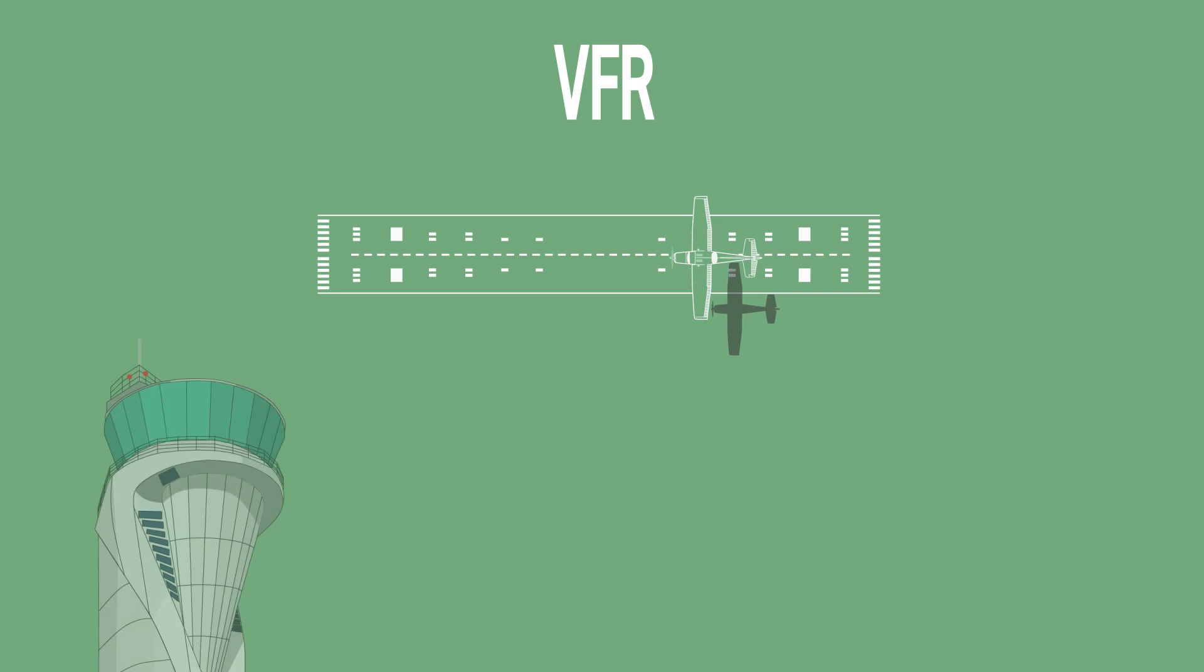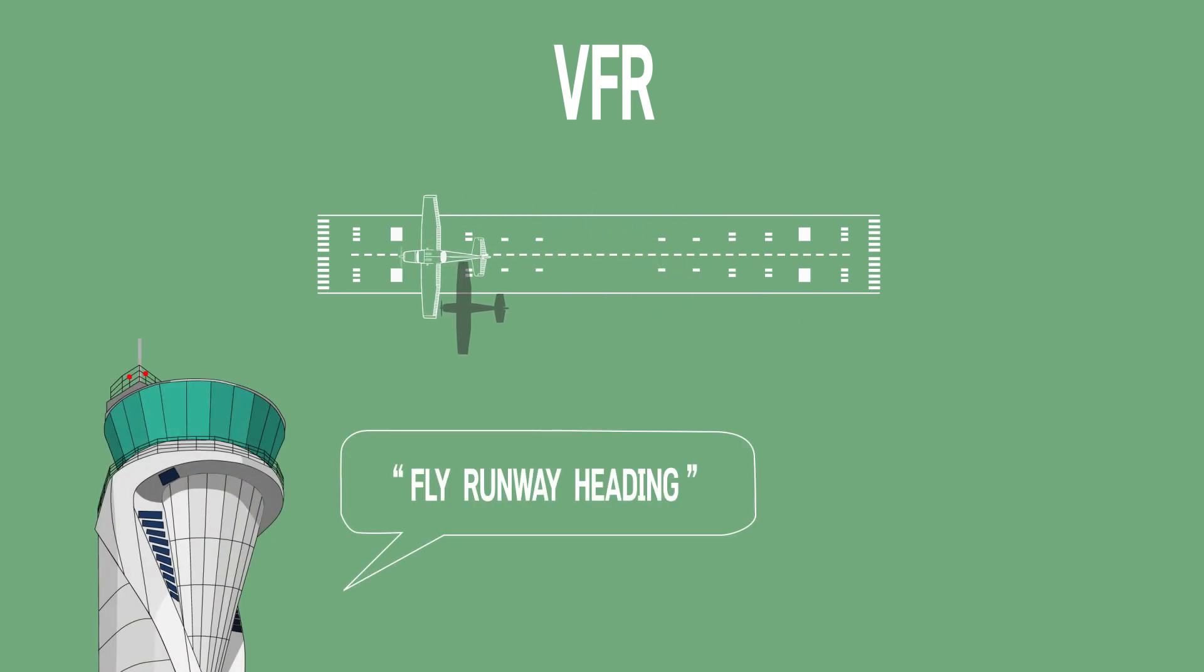In the case of VFR aircraft, after go-around, you follow the controller's instructions or climb over the runway to the pattern altitude to enter the crosswind.